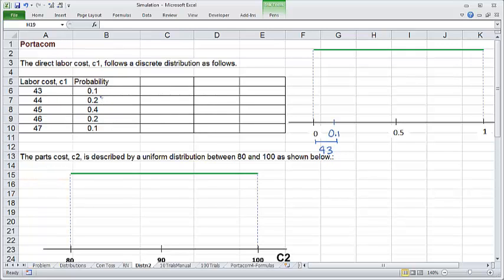What about 44? It has probability 0.2. So starting at 0.1, we would go 0.2 this way to come up with the interval. If the length of the interval is 0.2, then the interval should end at 0.3. So between 0.1 and 0.3 would correspond to 44.